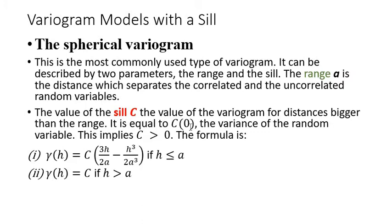The value of the sill C is the value of the variogram for distances h greater than the range, and it equals C-naught which is the variance of the random variables. If C is greater than zero, the formula for the variogram is: C times (3h over 2a minus h-cubed over 2a-cubed) for h less than or equal to the range. If h is greater than the range, the variogram equals C, a constant.